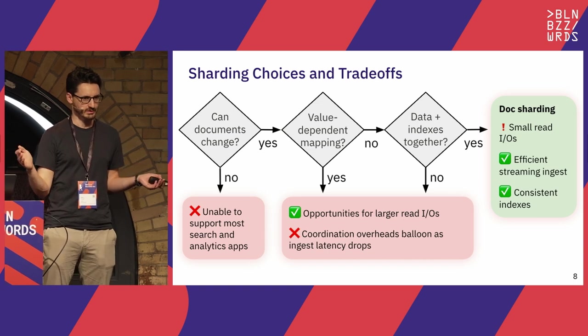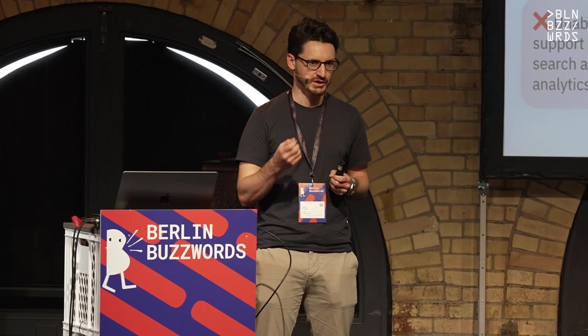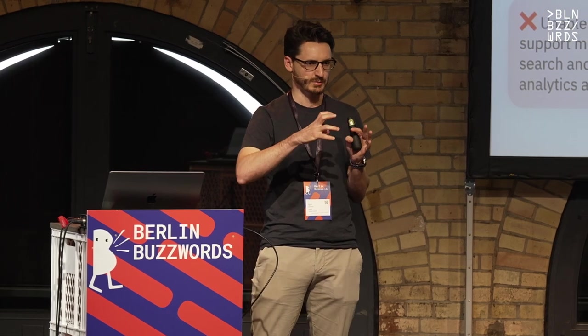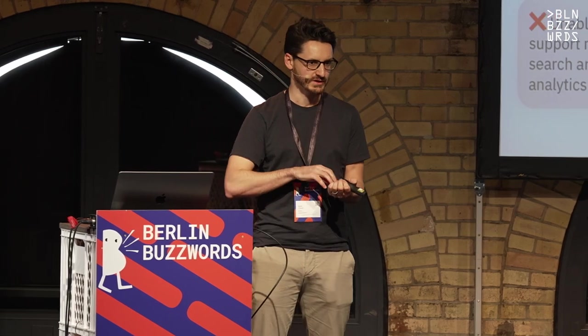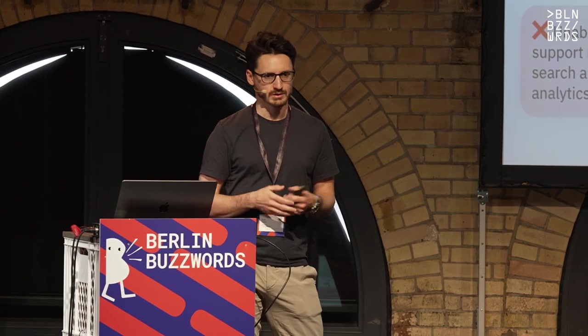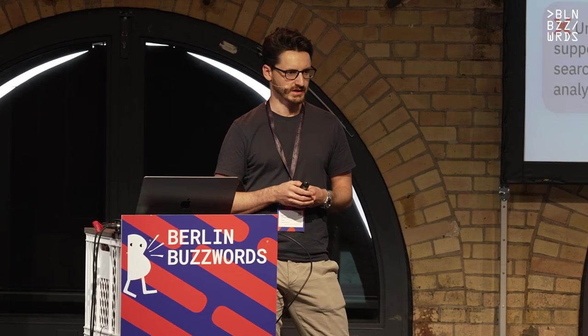The first downstream benefit is ingest is very efficient — for a particular shard, everything that happens for that ingest is local to that shard, with no cross-shard communication whatsoever. We also group indexes on the same shard where the data lives and keep them consistent using RocksDB's feature of atomic cross-column-family writes. So within the same shard — which is a RocksDB instance — we can have indexes that are consistent with the data itself.